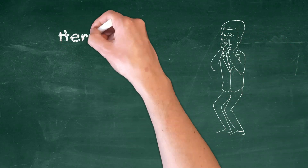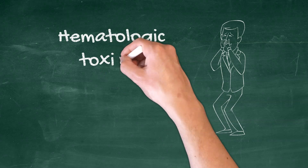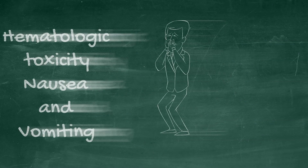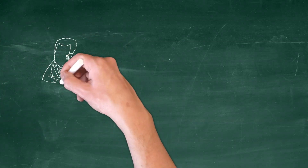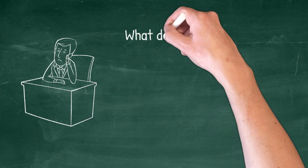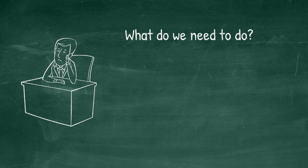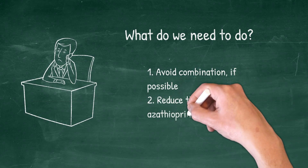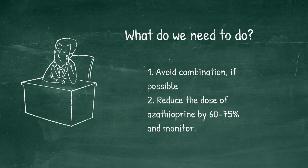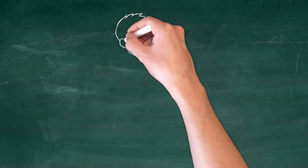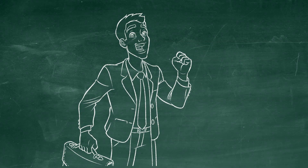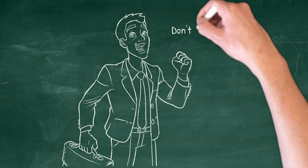The toxicities are mainly hematological, but also include nausea and vomiting. To deal with this interaction, there are two ways: you can either avoid the combination if possible, or reduce the dose of azathioprine by 60 to 75 percent. Don't forget to monitor for side effects.